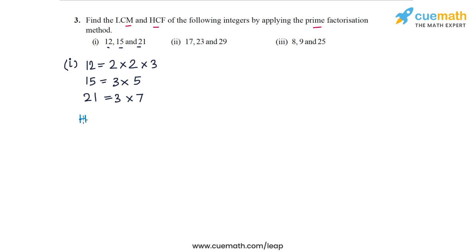To find the HCF, the HCF is the product of the smallest power of each prime factor in the given set of numbers. We see that only 3 is the common prime factor in the three integers, and 3 occurs once in each of these three integers. So the HCF will be 3.